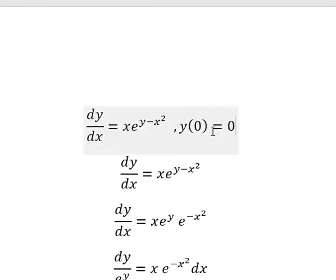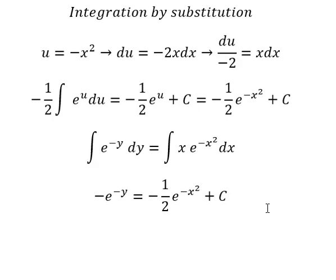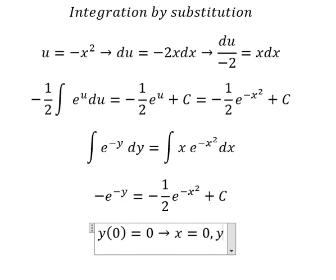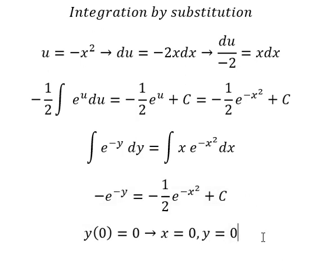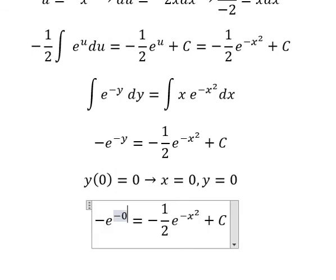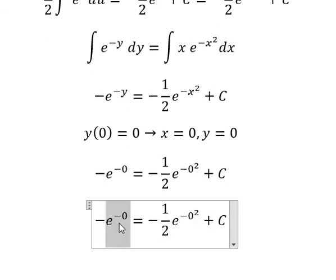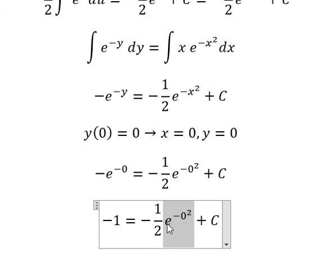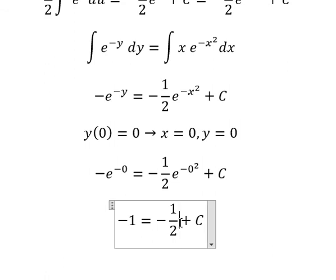Now we have the initial conditions. That means when x equals 0, y equals 0. So I will substitute these values to find the value of C. Substituting x equals 0 and y equals 0, we get negative e to the power of 0 equals negative one-half e to the power of 0 plus C, which gives us negative 1 equals negative one-half plus C.